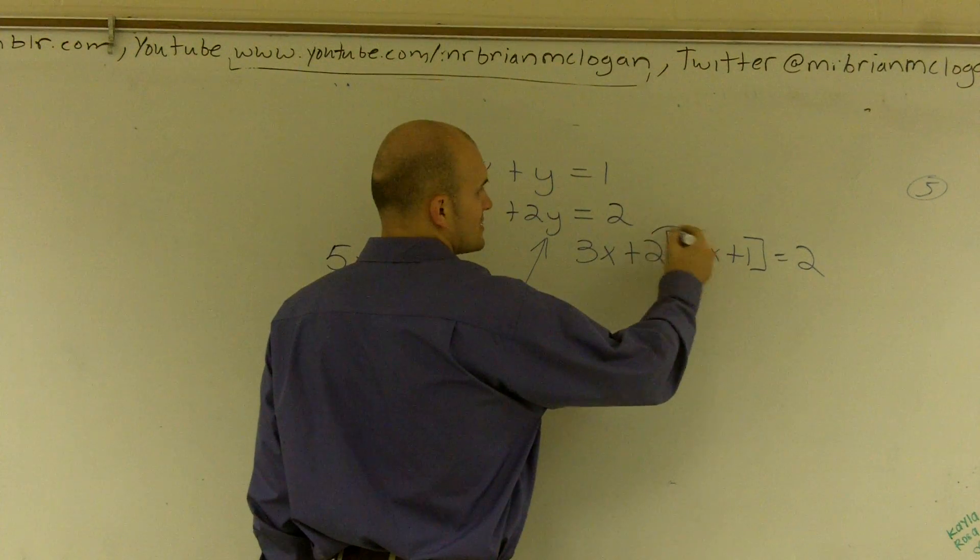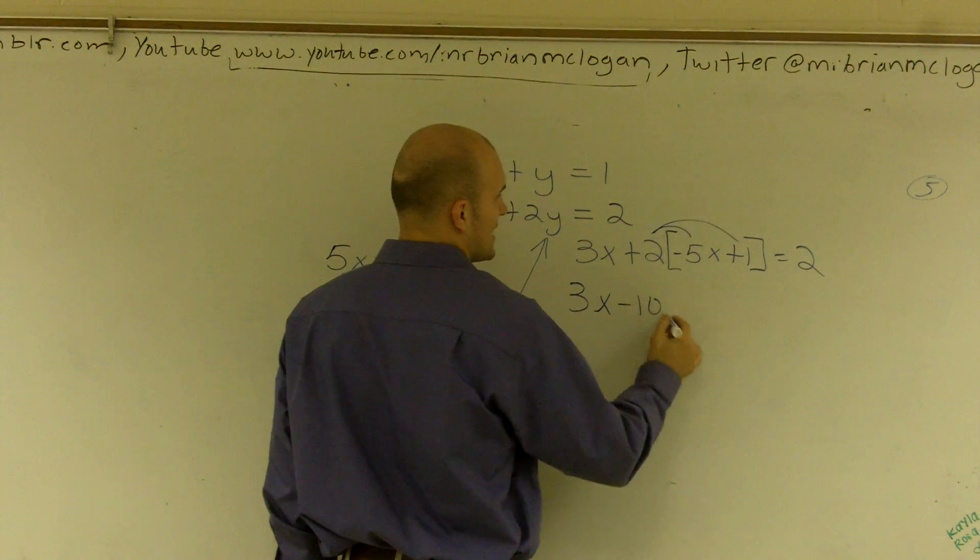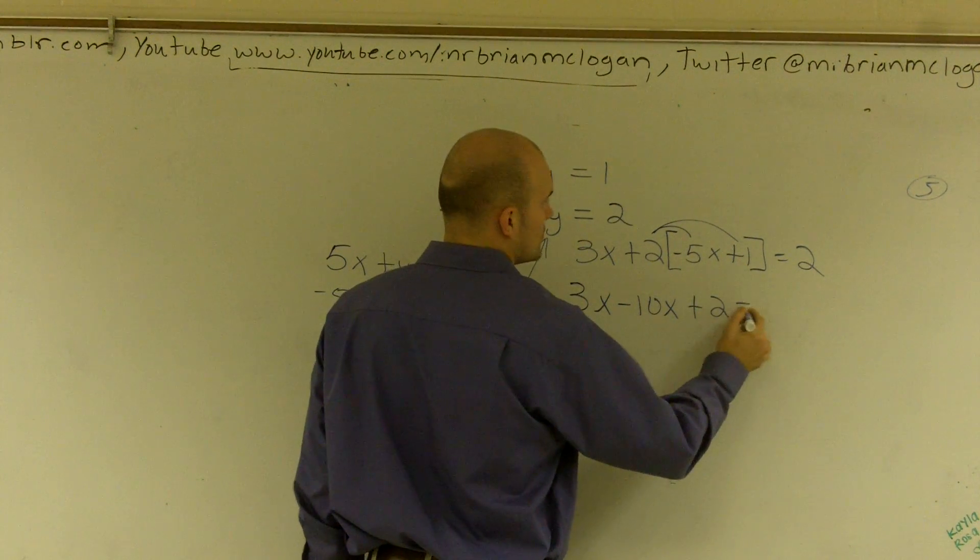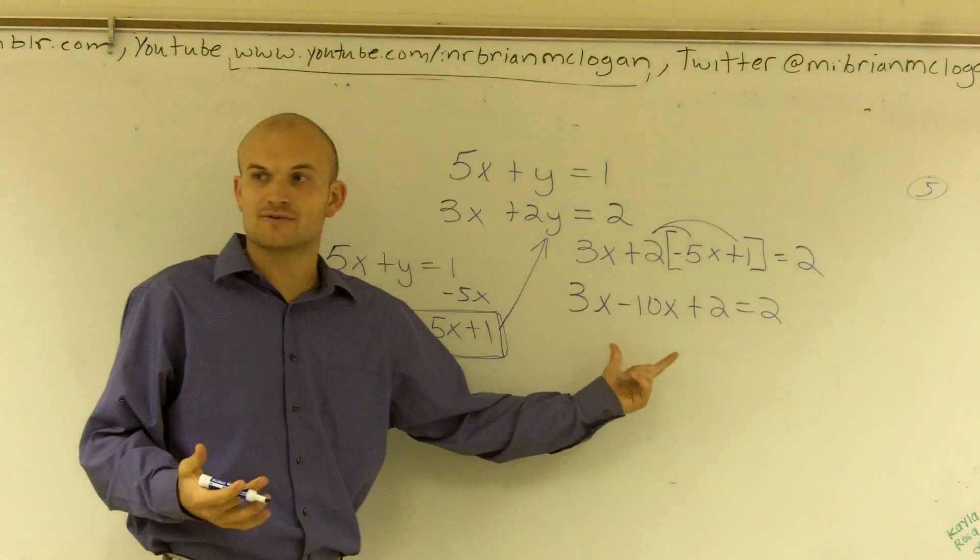Now what I need to do is I need to do the distributive property. So I have 3x minus 10x plus 2 equals 2. And now what I have is I have an equation with only my x values, right?